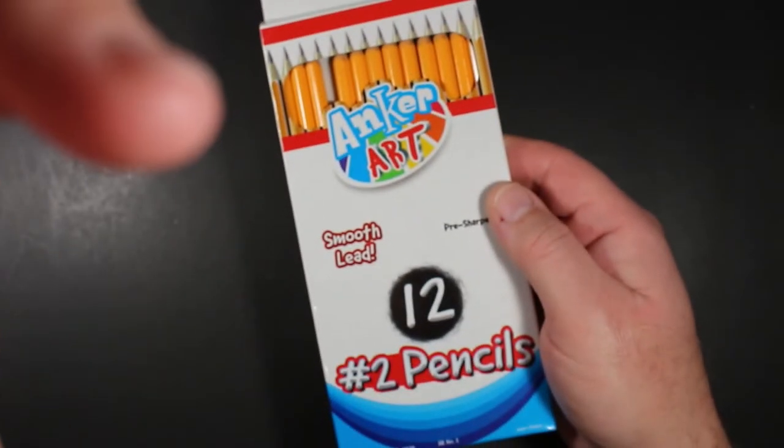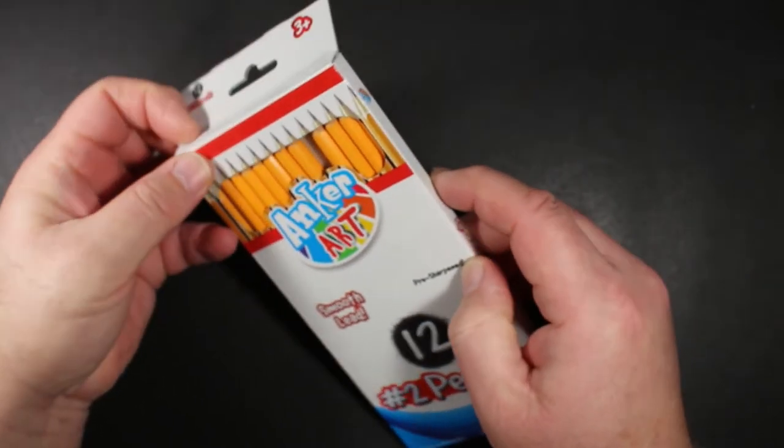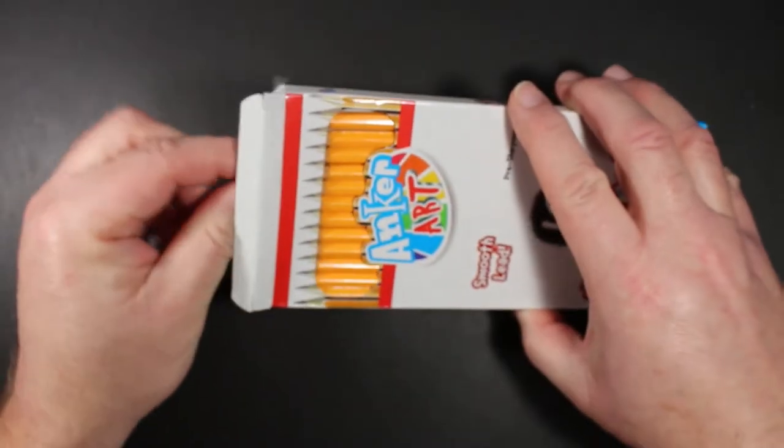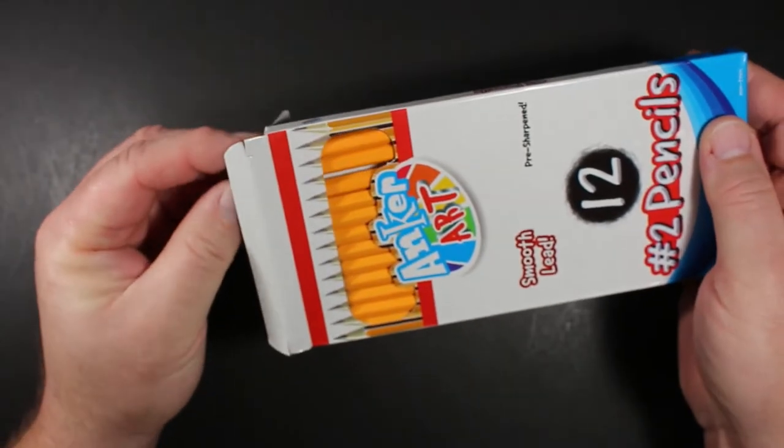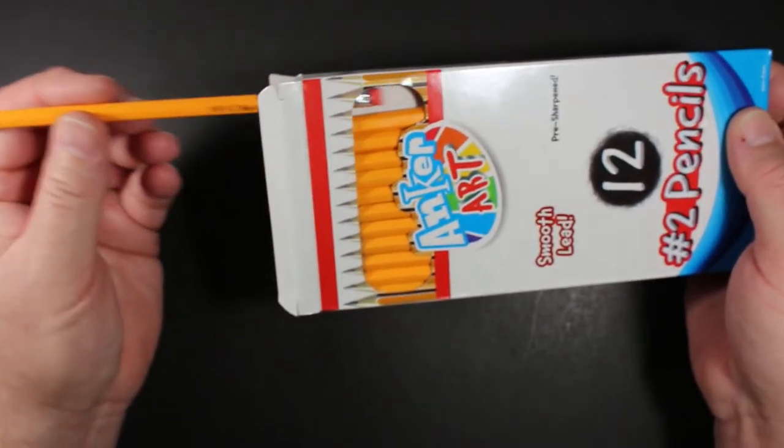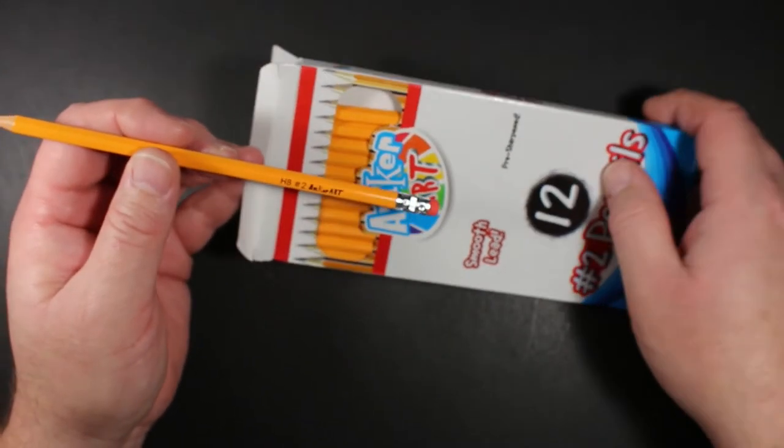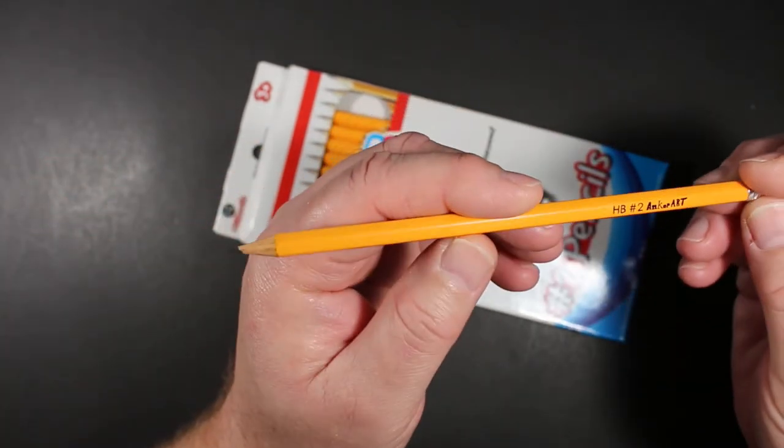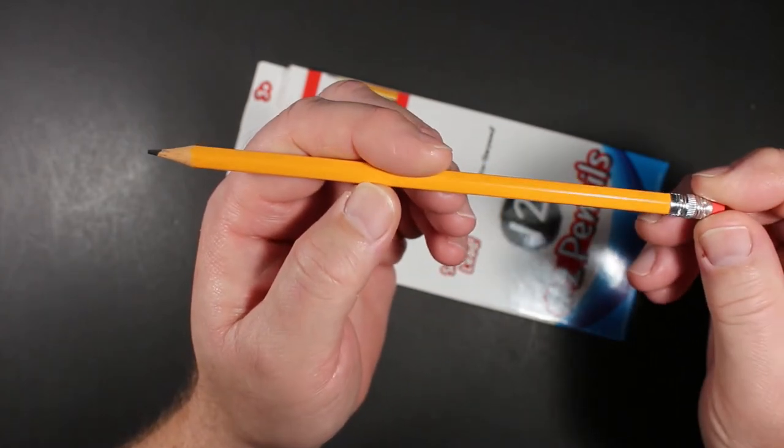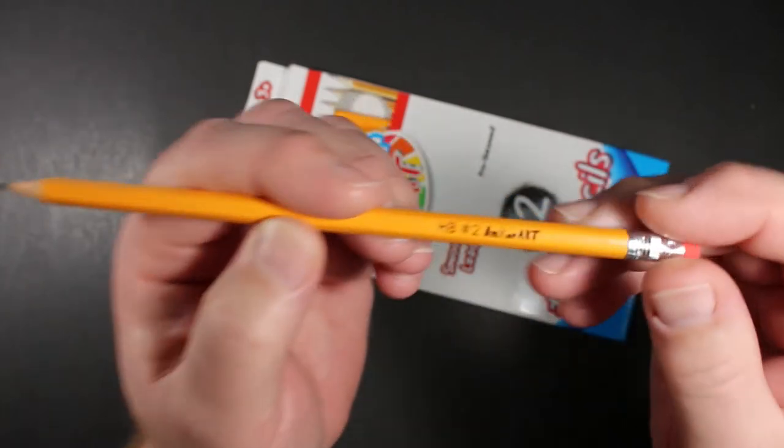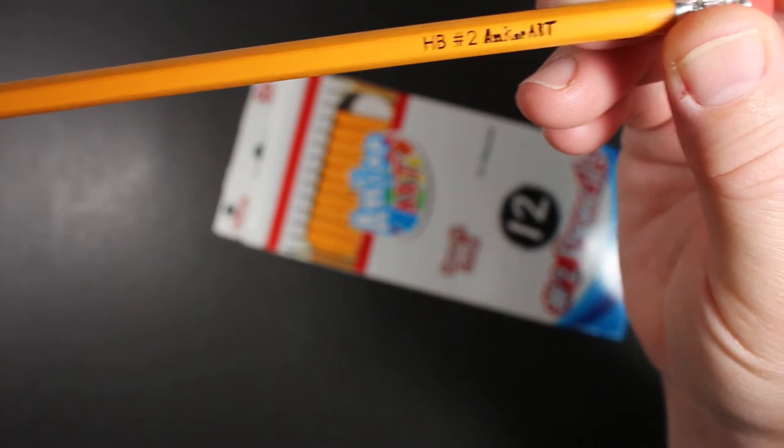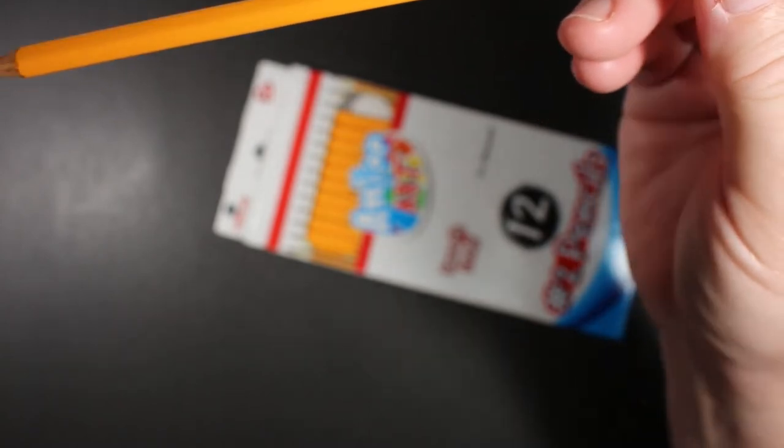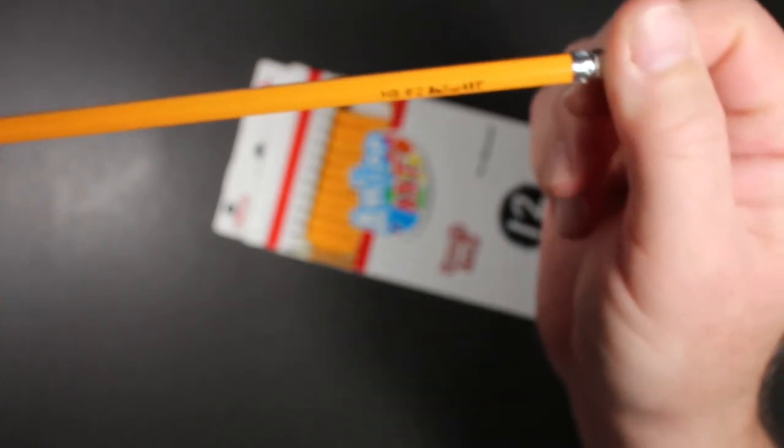So these are pencils that are made somewhere in India, and I'm wondering if these might be from Hindustan Pencil Company, who makes a lot of store brand and other branded pencils like the Walmart pen and gear stuff. These come pre-sharpened and here's how we are out of the box - very much a standard golden HB number two. You can see Anchor Art logo embossed there, nothing more to it than that, very straightforward pencil.